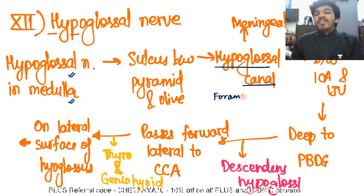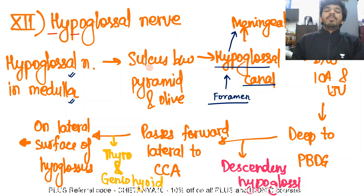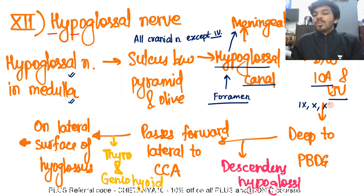You should be aware of the various foramina in the norma basalis and the various fossae of the skull. The hypoglossal canal is the foramen through which it exits. Within this hypoglossal canal it gives a meningeal branch which supplies the meninges. Please remember: all cranial nerves except the trochlear nerve give a meningeal branch. Then the hypoglossal nerve passes between the internal carotid artery and the internal jugular vein. The 9th, 10th, 11th, and 12th cranial nerves all pass between the internal carotid artery and the internal jugular vein.